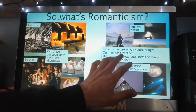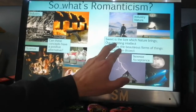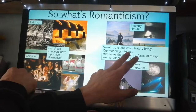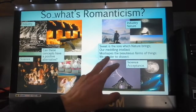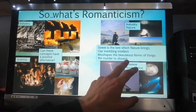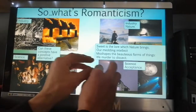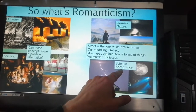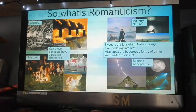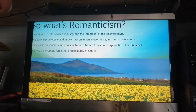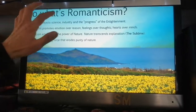Wordsworth himself wrote these beautiful words: 'Sweet is the lore which nature brings — our meddling intellect misshapes the beauteous forms of things. We murder to dissect.' So by trying to understand the cosmos and universe, we kind of murder it, and we should instead accept that we will not — and should not — understand it, and simply appreciate and accept it. That's one of the key tenets of Romanticism.